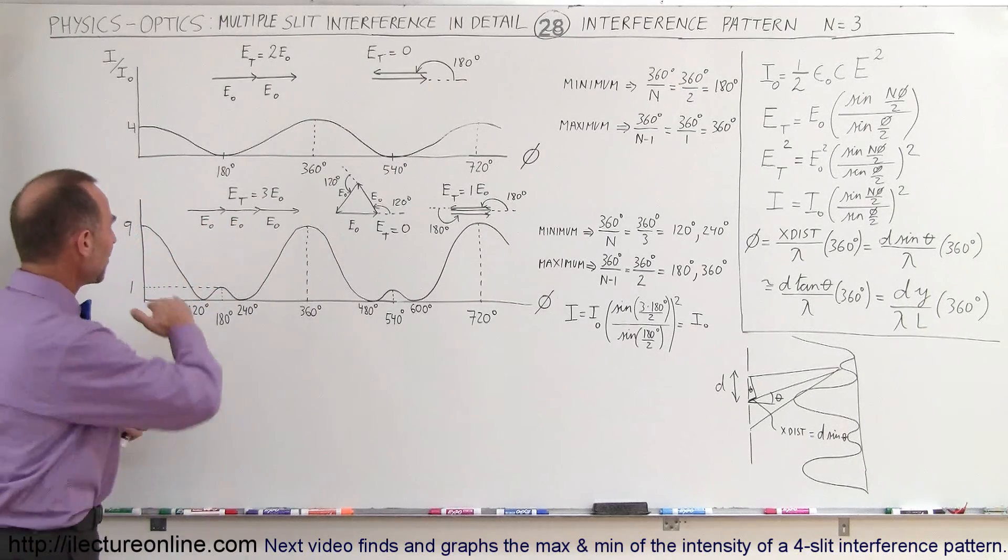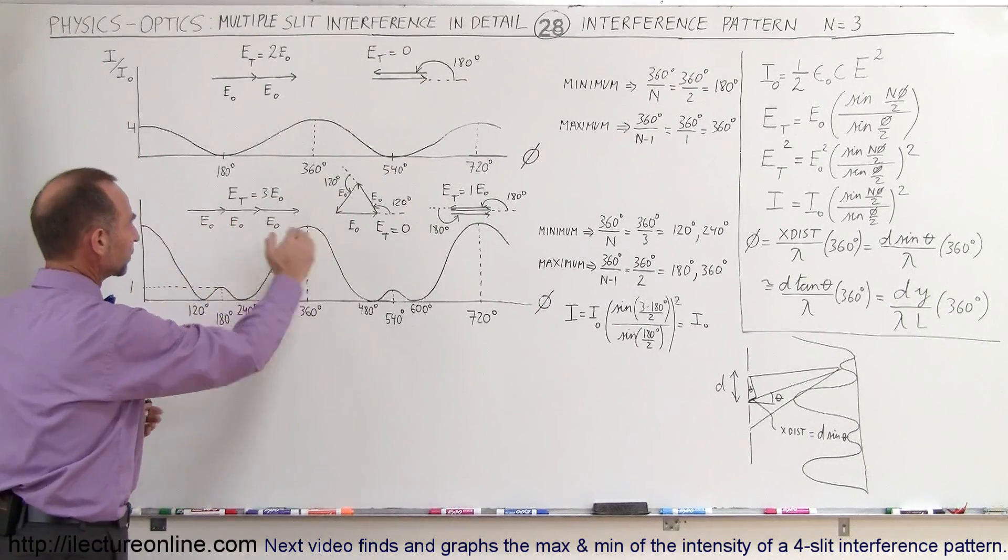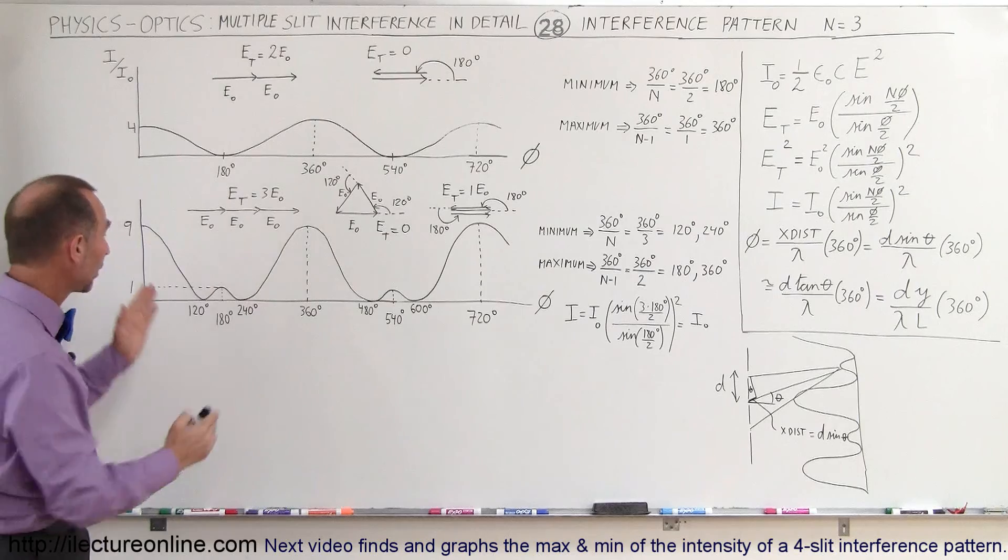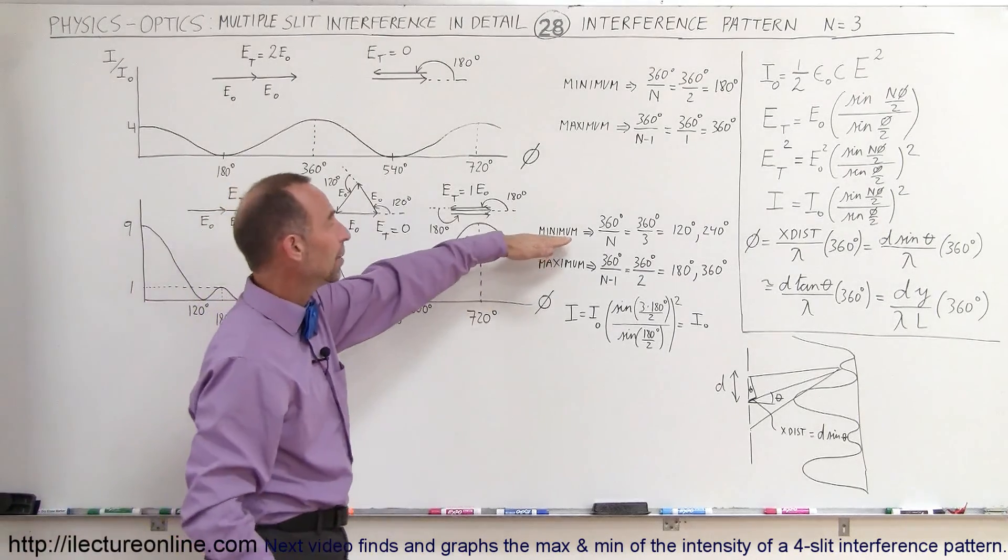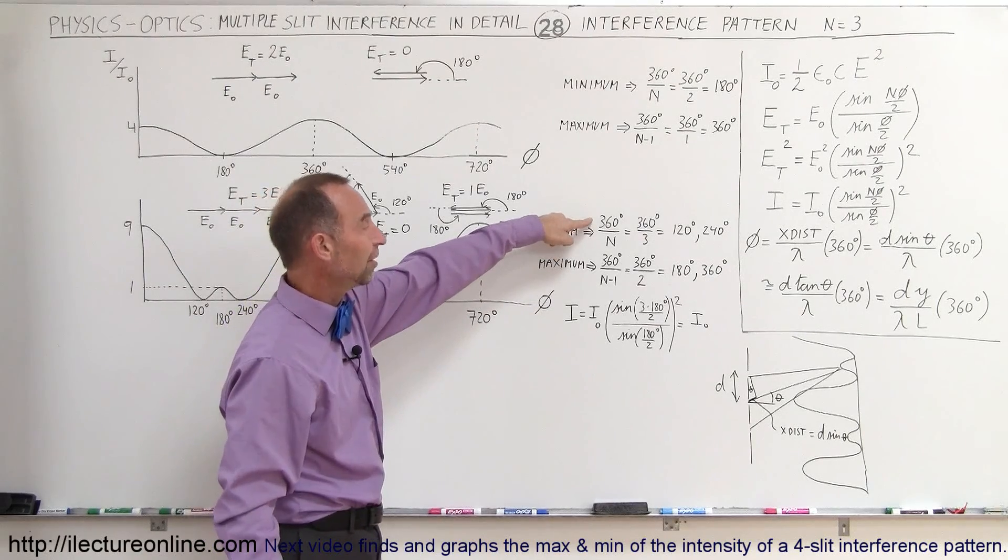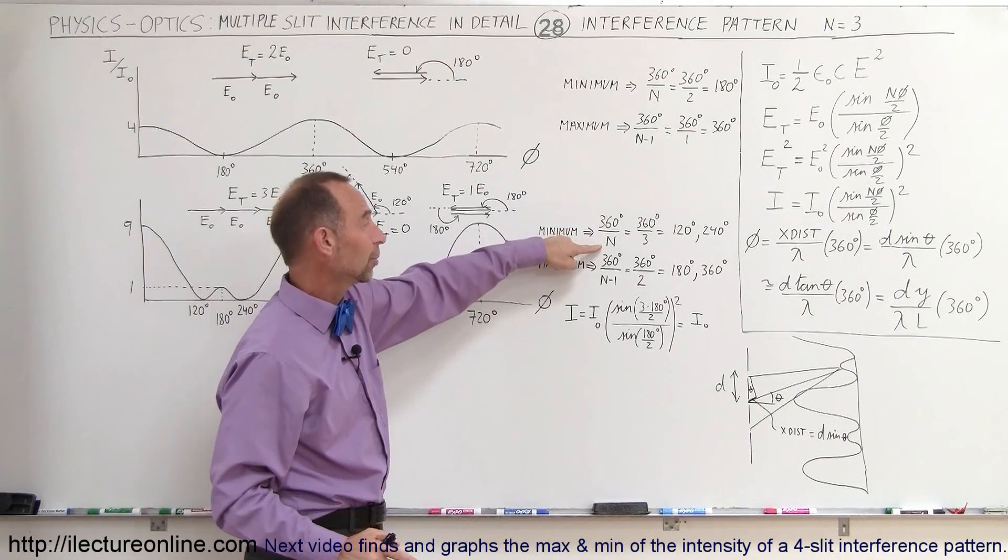So what we have here is we have a pattern that now looks like this. An easy way to figure out where the maximum and where the minimum points are can be done by taking the minimum points, can be found by taking a full phase, 360 degrees, and divided by the number of slits.